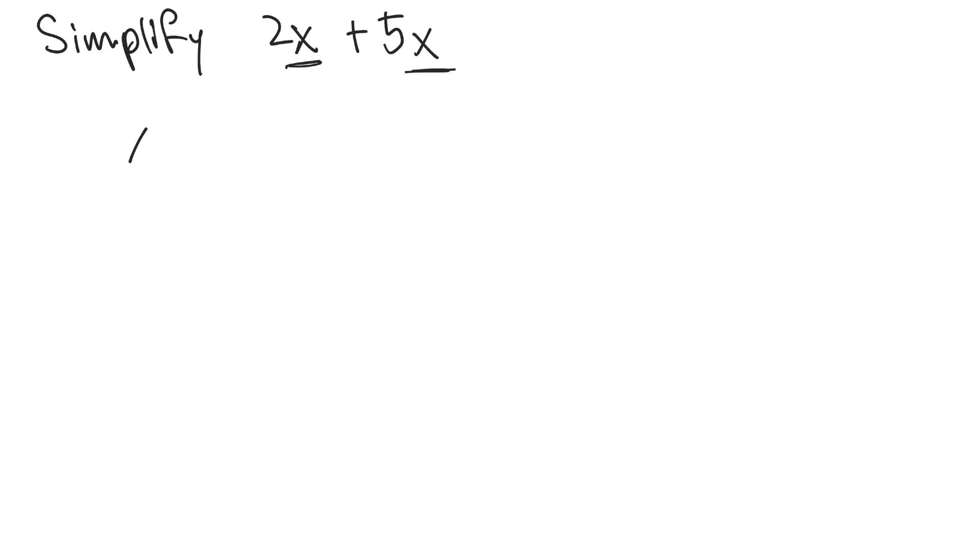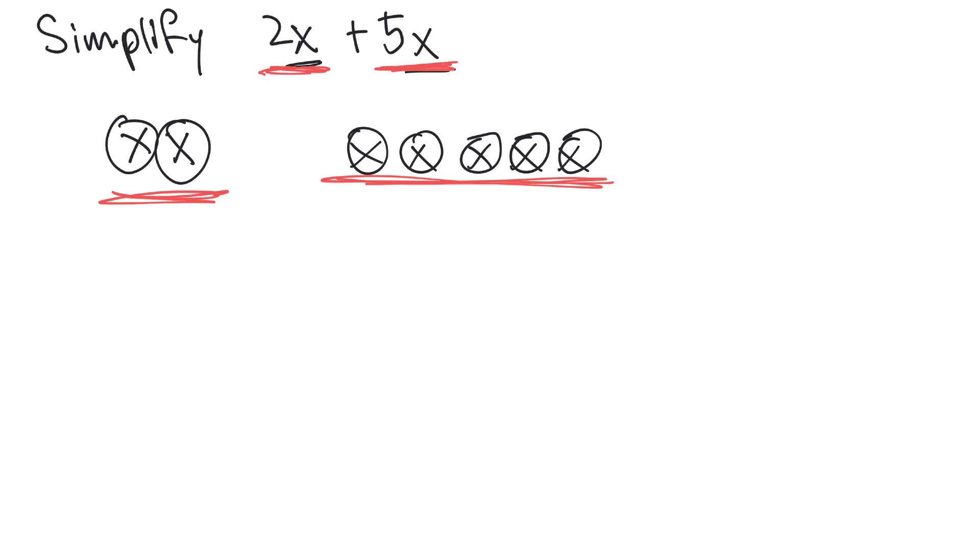So, say we have an x here, right? Okay, that's 1x. So what this problem is really saying is we're adding 2 of these x's here, which can be represented as this 2x here, to 5x's here. And these 5x's are represented as 5x.